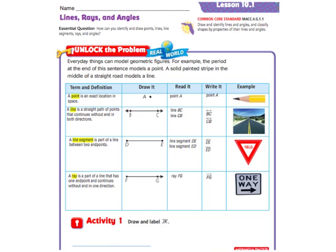It says everyday things can model geometric figures, shapes. For example, the period at the end of the sentence models a point. So a point, right here, a point is an exact location in space. It just looks like a period. And it will have a letter next to it, and you'll say, you will call that point A, or point whatever letter it is. So an example of a point in real life would be this pencil here, the very tip of it, as it makes a dot on your paper like a period.